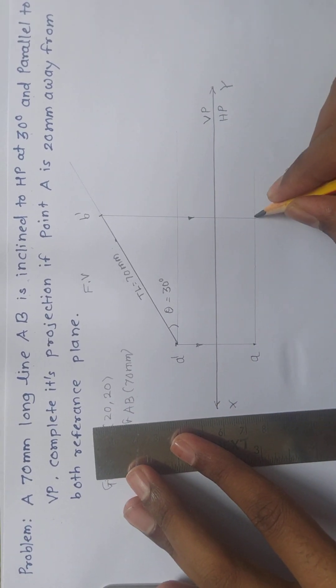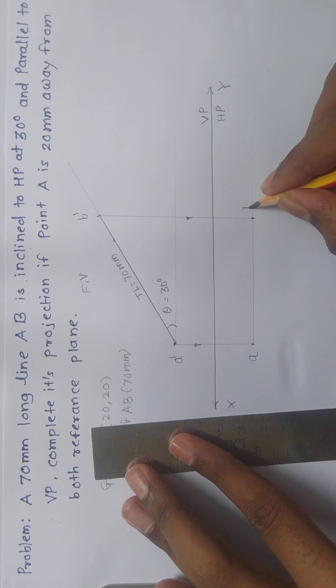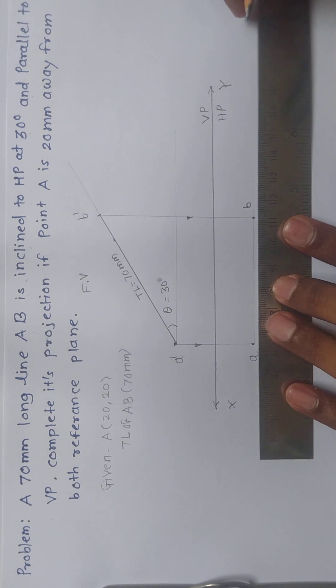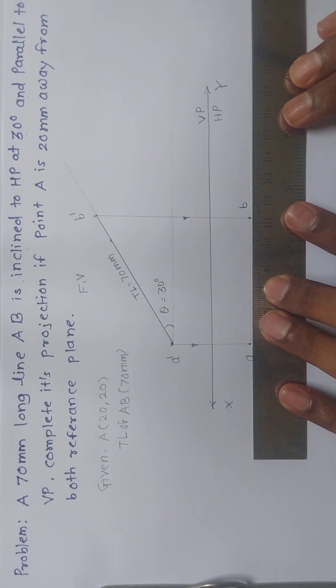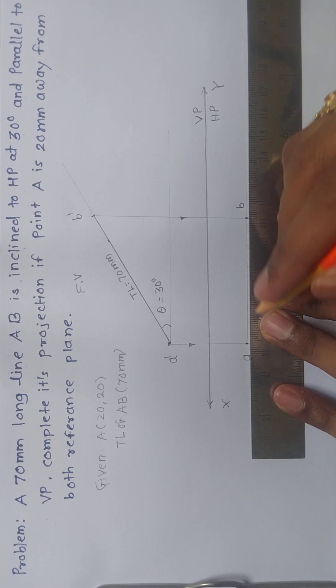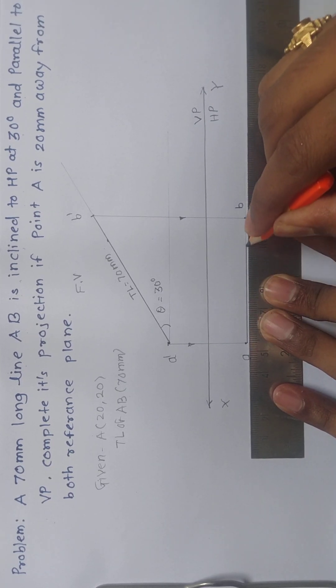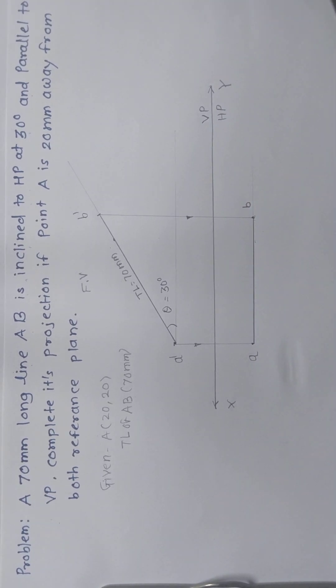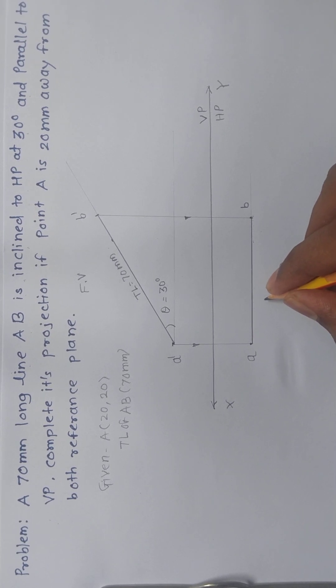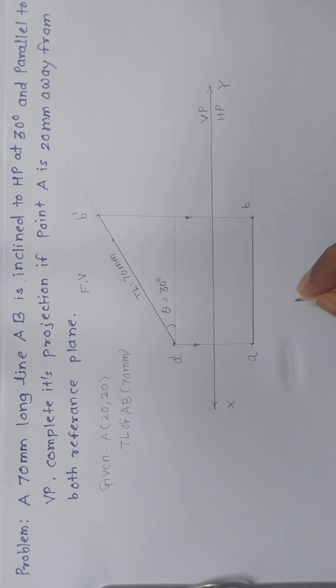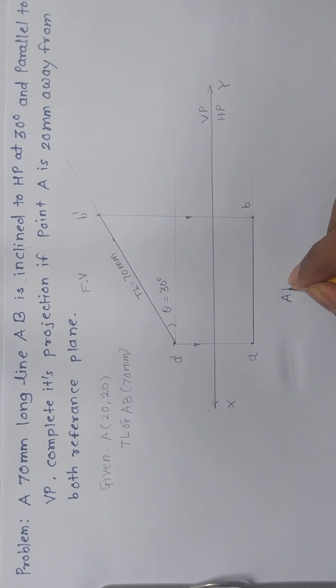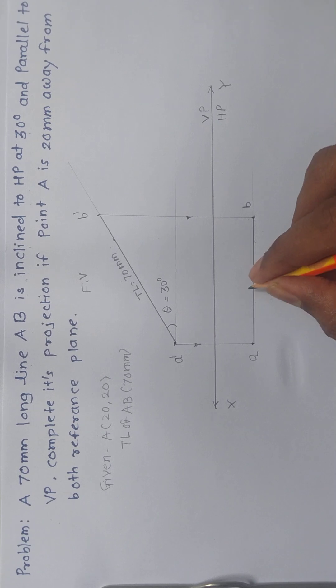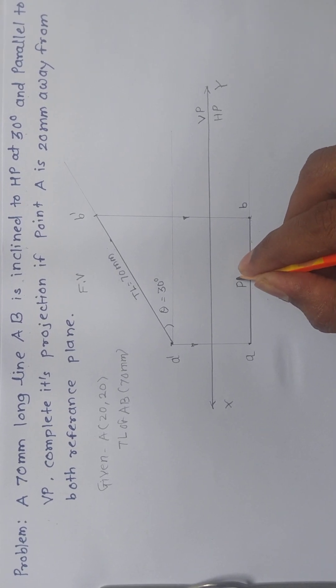This is point A and this will be point B. This is the apparent top view or apparent length in top view. I will make it dark. You have to use an H or HB pencil. This is the apparent length in top view, which is also known as PL or plan length.